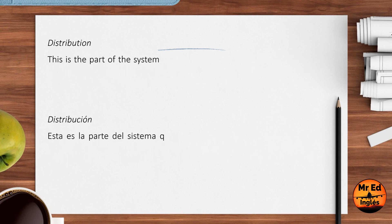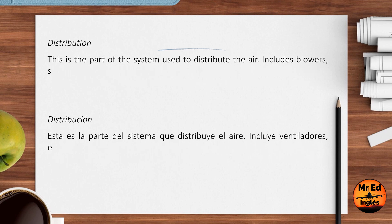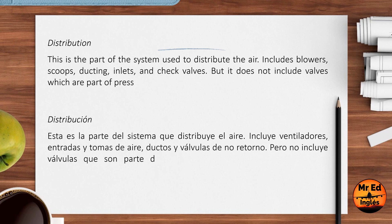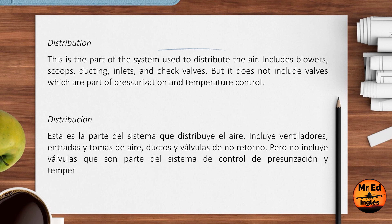Distribution: this is the part of the system used to distribute the air. It includes blowers, scoops, ducting, inlets and check valves, but it does not include valves which are part of pressurization and temperature control.